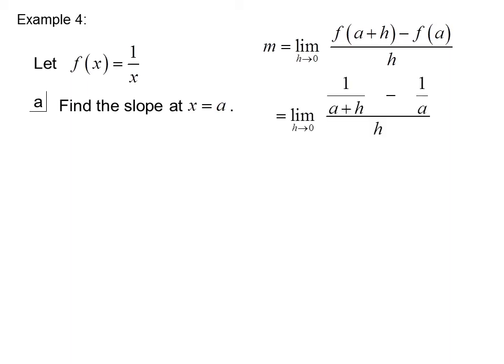In this case, since f(x) is 1 over x, f(a plus h) would be 1 over (a plus h), and f(a) would be 1 over a. So we have the limit as h goes to 0 of 1 over (a plus h) minus 1 over a, all over h.